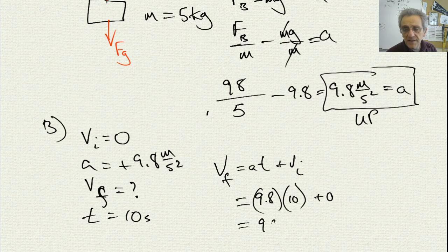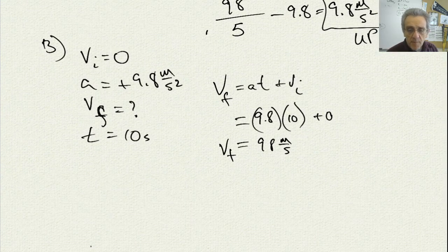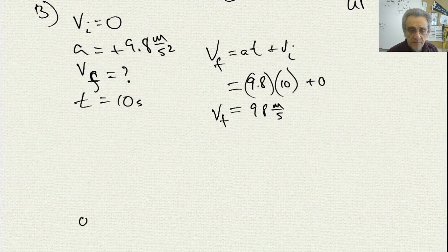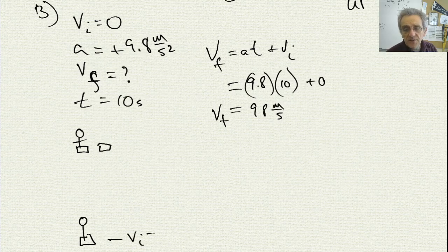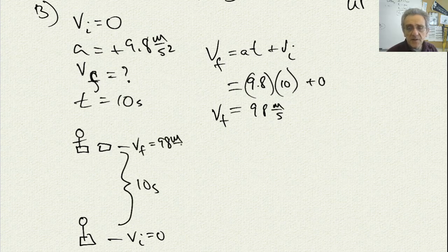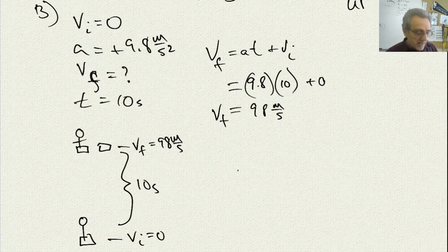That gives us 98 meters per second. So the balloon starts from rest and goes up. At the point where the rope is cut and the package is released, the initial velocity was zero, and after 10 seconds the final velocity is 98 meters per second upward.